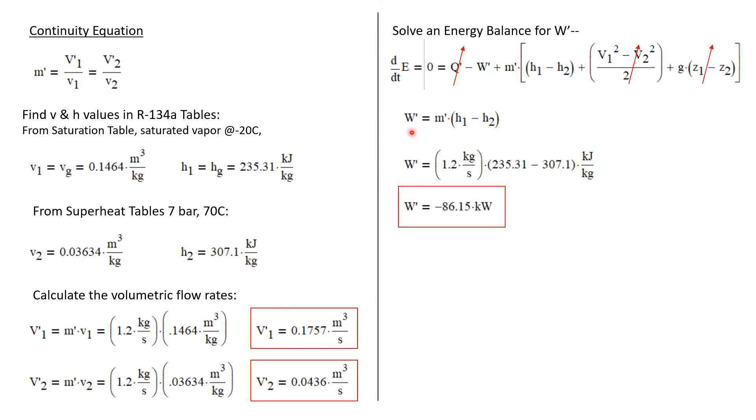And so simplifying and rearranging, we get the work or the power for this system. It's just the mass flow rate times H1 minus H2. And remember that W is positive when the system produces work.